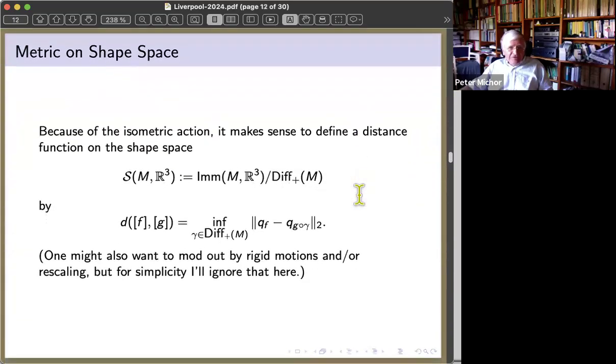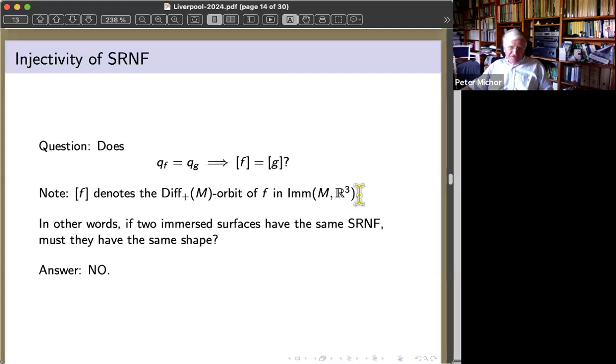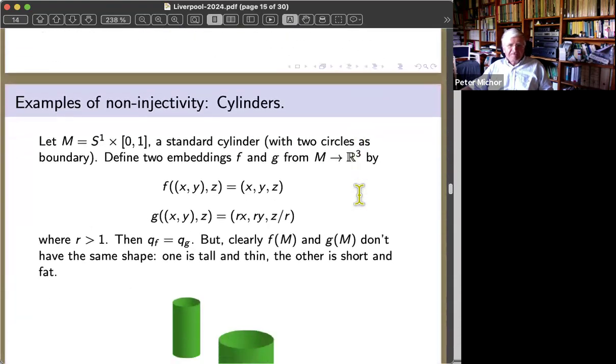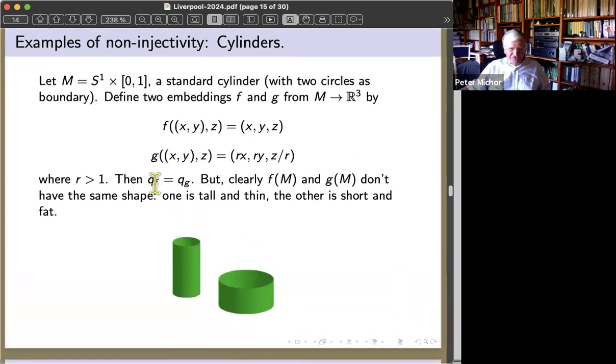Is the square root normal form injective? Answer is no. Easy examples in the beginning: you take a cylinder, a standard cylinder with two circles as boundary, and you define two embeddings F and G from M into R^3. One is just a standard embedding, and the other one is you enlarge the circle but reduce the height. So one is tall and thin, and the other is short and fat, and they have the same square root normal form.